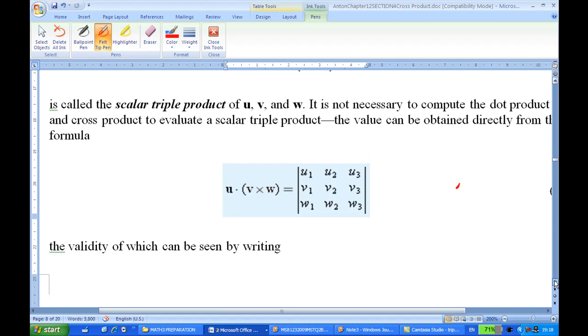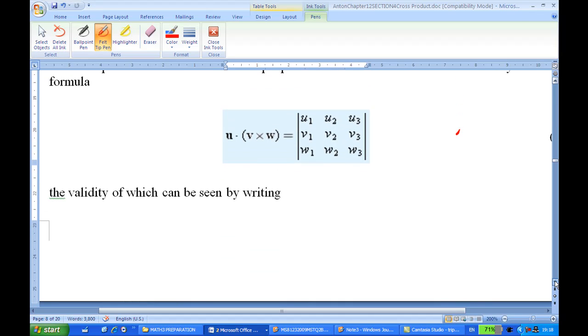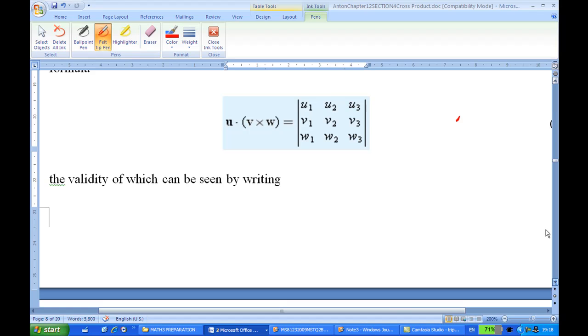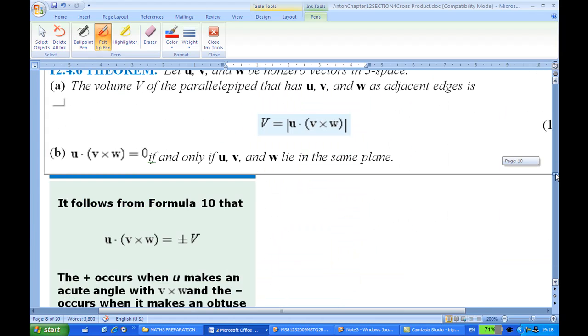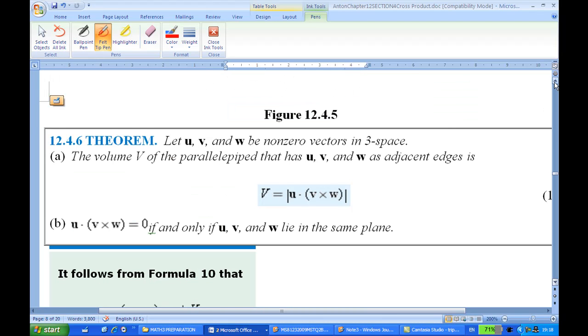Okay, so let me show you some properties from the Howard Anton book. The volume of the parallelepiped, there is a theorem here that says that if u, v, and w are non-zero vectors in three-space, the volume of the parallelepiped with u, v, w as adjacent edges is absolute value of u dot v cross w.